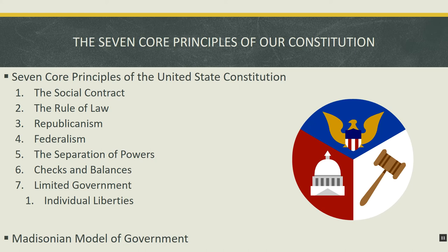Combining the Enlightenment, the First Great Awakening, and those colonial and post-revolutionary experiences gives us an understanding of why our Constitution says what it says. Let's move on to the second learning objective: the seven core principles of the United States Constitution. They are: the social contract, the rule of law, republicanism, federalism, the separation of powers, checks and balances, and limited government — including individual liberties. I'll provide quotes from the framers and founding fathers to illustrate the spirit with which these principles were held.